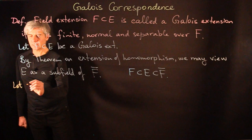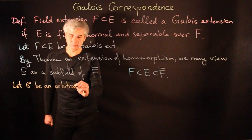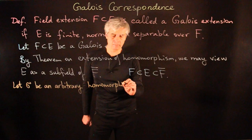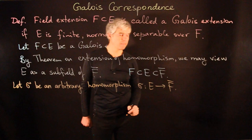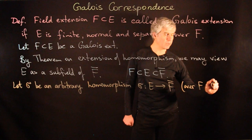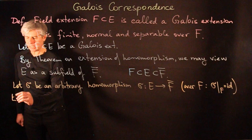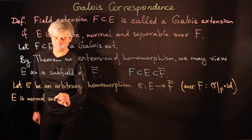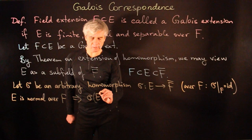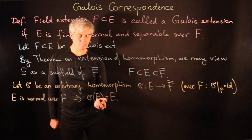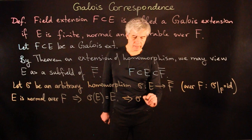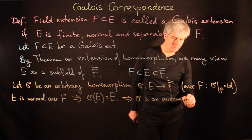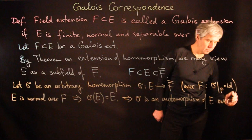Let sigma be an arbitrary homomorphism of E into F-bar, taken over F, meaning that sigma restricted to F is the identity. Since E is normal over F, we know that sigma of E is equal to E — that is, sigma will preserve E as a set. And then this tells us that sigma is an automorphism of E over F.